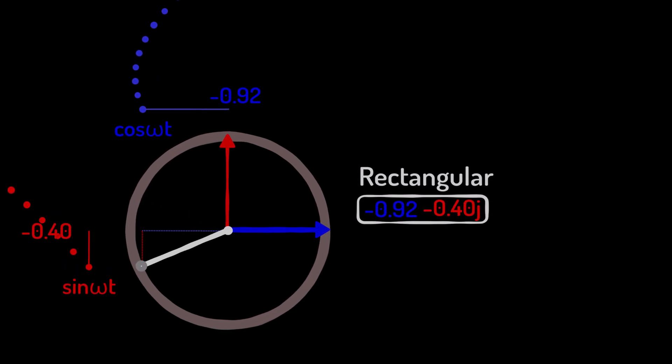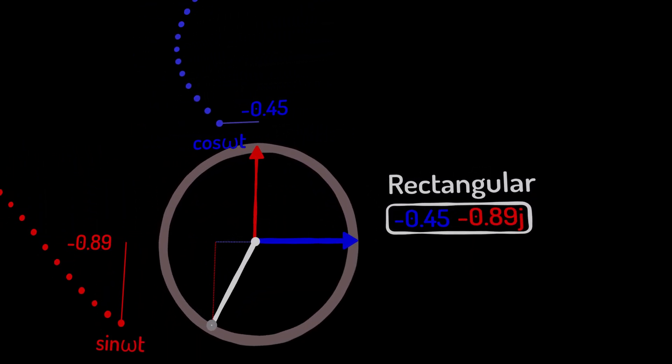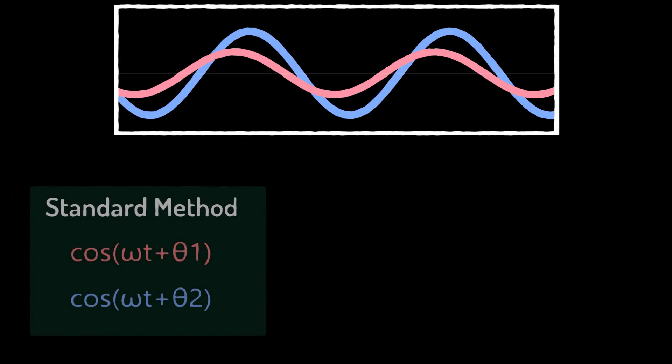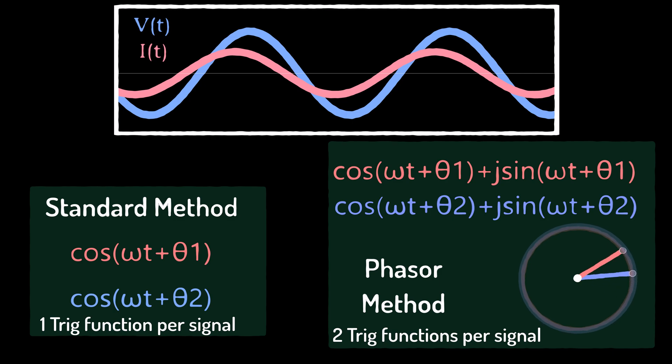We might at this point ask the question, what is the point of doing this? On the face of it, we've added an extra layer of complexity because we need two trigonometric functions rather than just one to represent our signal.